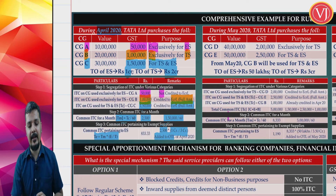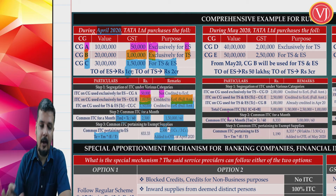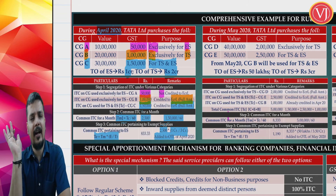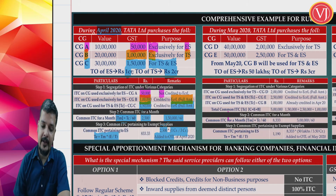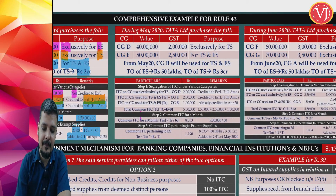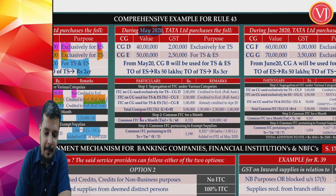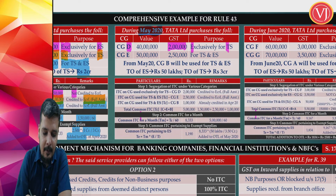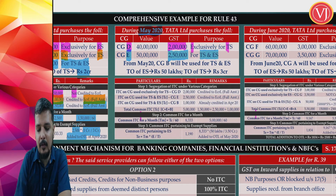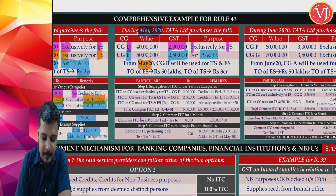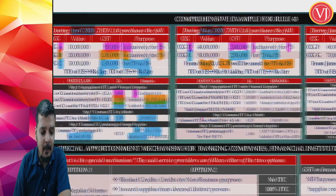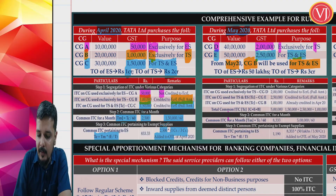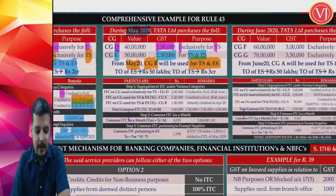Continuing the example into May 2020: Tata Limited purchases Capital Goods D (GST 2 lakhs — exclusively taxable, full credit) and Capital Goods E (GST 2.5 lakhs — common, used for both taxable and exempt). Additionally, Capital Goods B — previously used only for taxable supplies — will now be used for both taxable and exempt supplies from May.